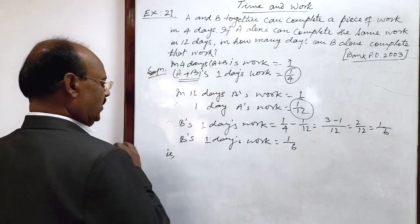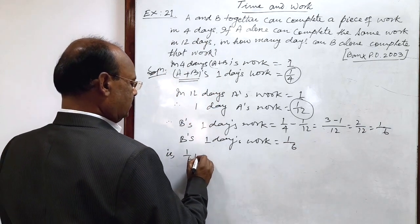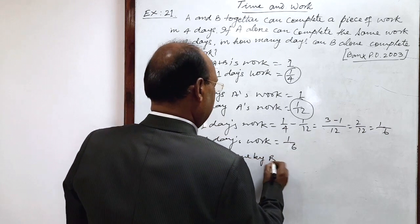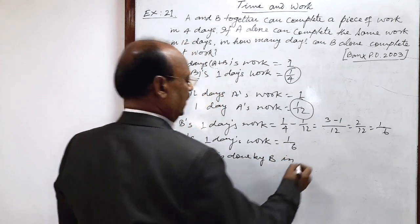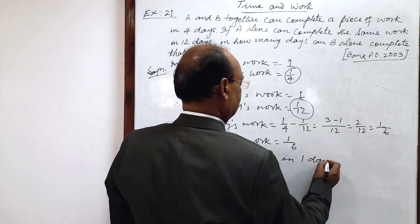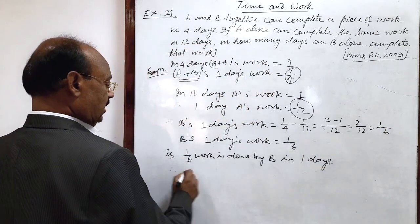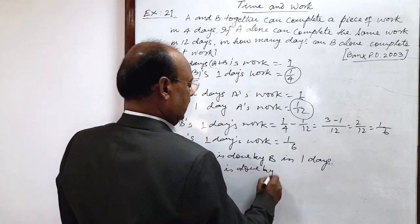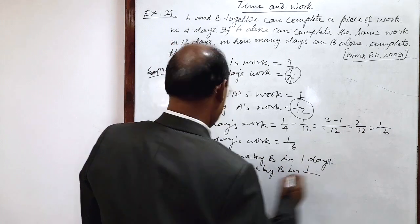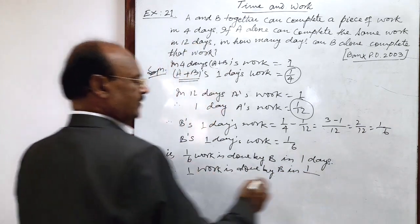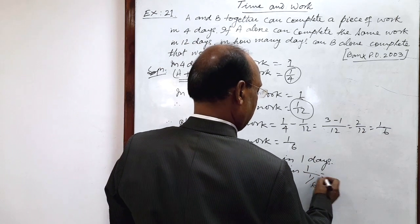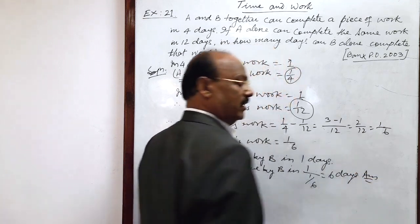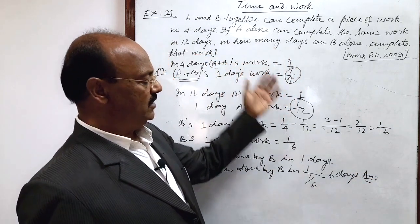That is, it means one by six work is done by B in one day. So by unity method therefore, one work is done by B in one upon one divided by six is equal to six days. So this is the required answer. So what is the answer? Six days.